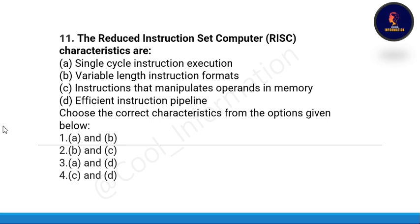Question number eleven: the characteristics of Reduced Instruction Set Computers. Four statements: A — single cycle instruction execution; B — variable length instruction format; C — instructions that manipulate operands in memory; D — efficient instruction pipeline. The correct answer includes statements A and D, which are single cycle instruction execution and efficient instruction pipeline.